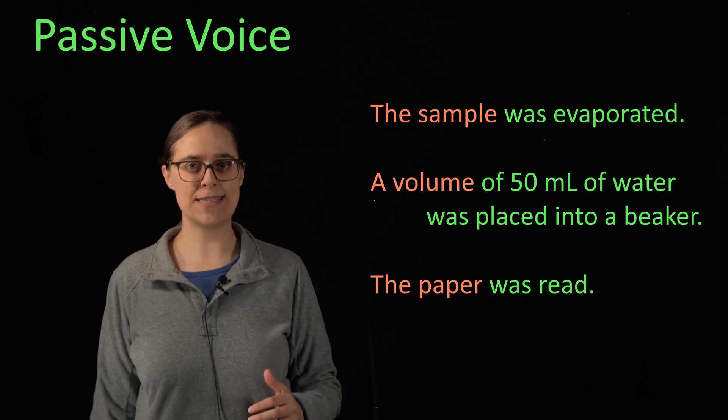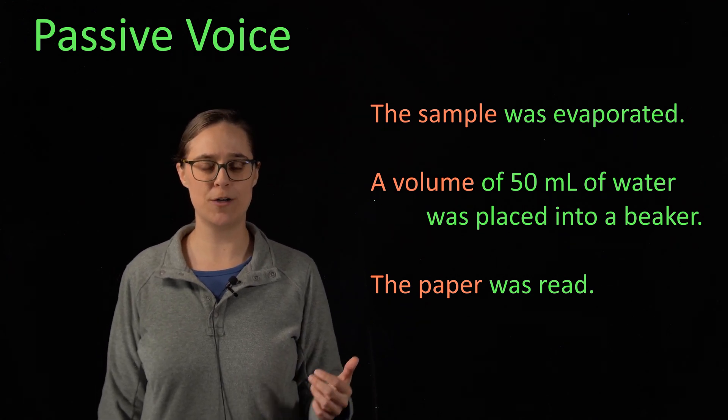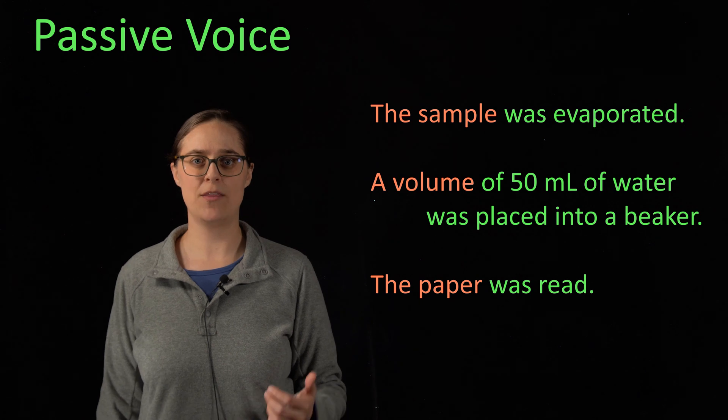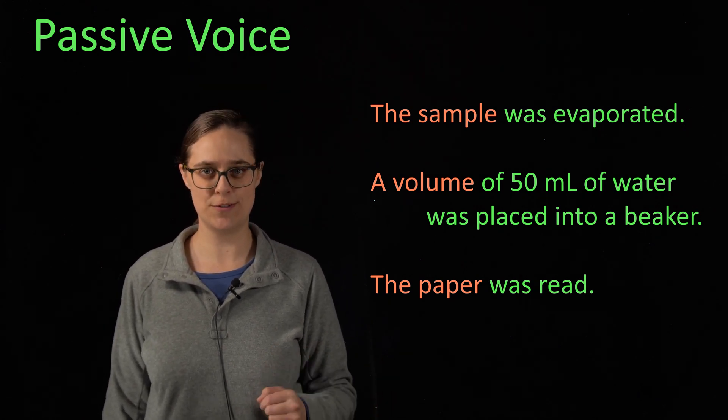In passive voice, the subject of the sentence has the verb's action performed on it. If you have performed a lab experiment and you are writing about it in passive voice, in general, the subject of the sentence is not a person. The sample was evaporated. A volume of 50 milliliters of water was placed into a beaker. The paper was read. This is how you want to write for scientific writing.